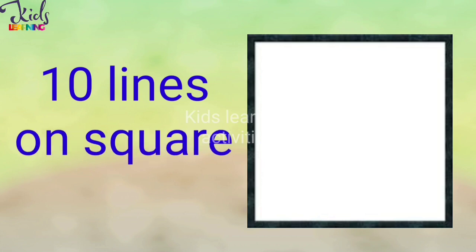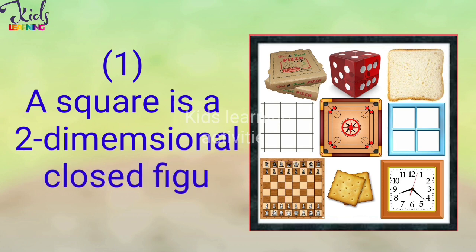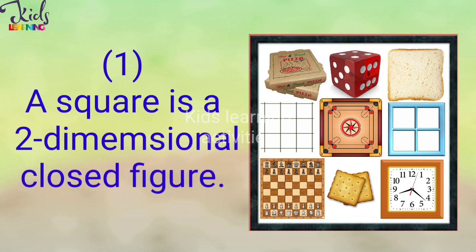10 Lines on Square. A square is a two-dimensional closed figure.